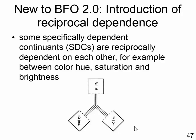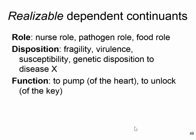In BFO 2.0 we have reciprocal dependence: for instance, the hue, the saturation, and the brightness of a color depend upon each other — you can't have one without having the other two. These are the three subtypes BFO distinguishes of realizable dependent continuants. This is not necessarily an exhaustive list — there may be other realizable dependent continuants which BFO needs to recognize also. BFO doesn't claim to be complete; it claims to want to be complete. If somebody needs a fourth kind of realizable dependent continuant and makes a good case, then we would add that to the list.